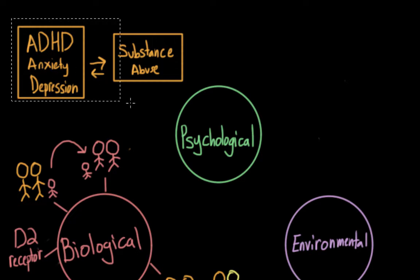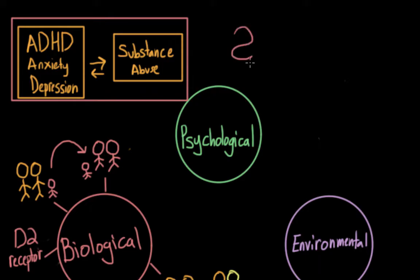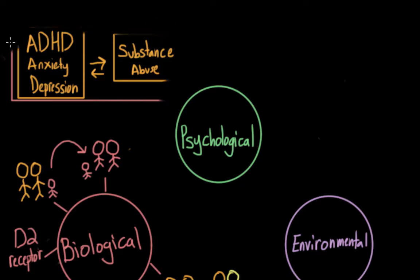Or maybe both mental illness and substance abuse problems could be generated by a third factor. Maybe some genetic vulnerability for both. Either way, it's important to keep in mind when we discuss all of these risk factors that correlation does not imply causation.